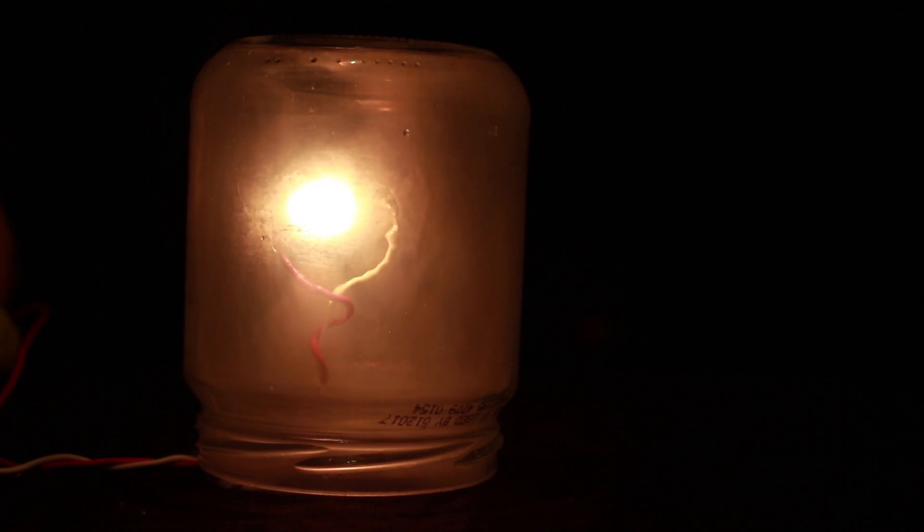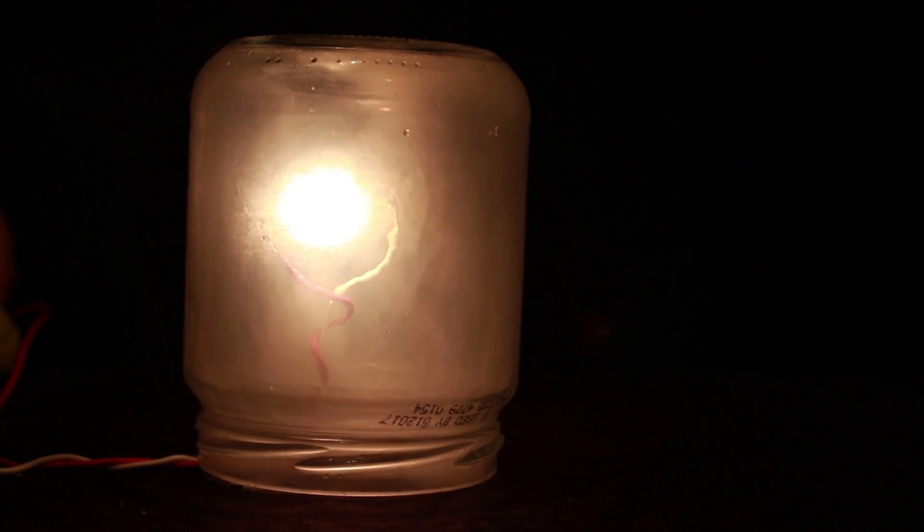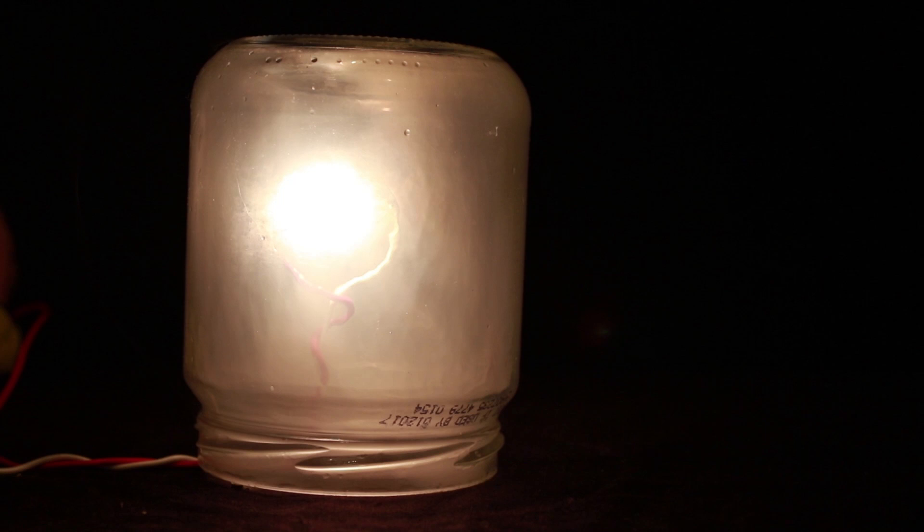To prevent the graphite from burning out, surround it with a glass container filled with a less reactive gas such as helium, argon, or even carbon dioxide.